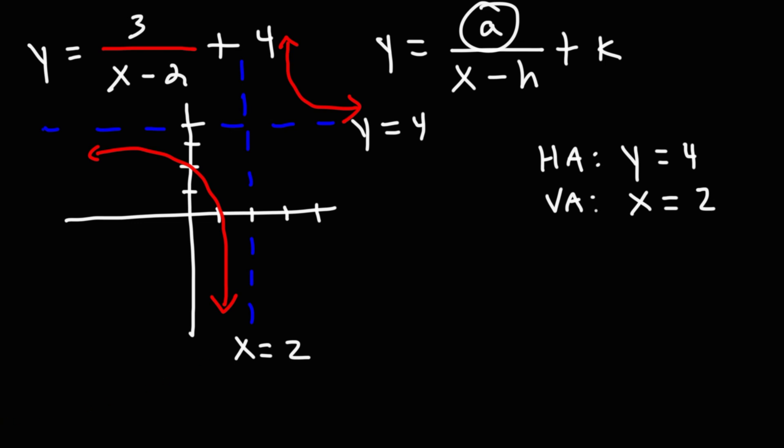To write the domain, we need to include all of the x values from left to right. So all the way to the left is negative infinity. All the way to the right is positive infinity. So we're going to write all the x values from left to right, excluding the vertical asymptote.